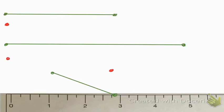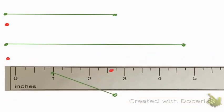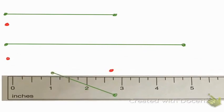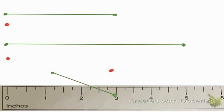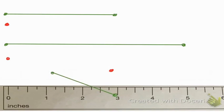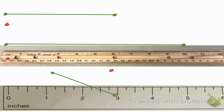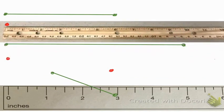In your packet you should have received lesson worksheet six. As you can see, we have three different lines on here, and we're going to use our ruler to measure those line segments. A line segment is a line but it doesn't go on forever — it has a starting point and an ending point. You can see the line segments that are already drawn have a start point and an end point.